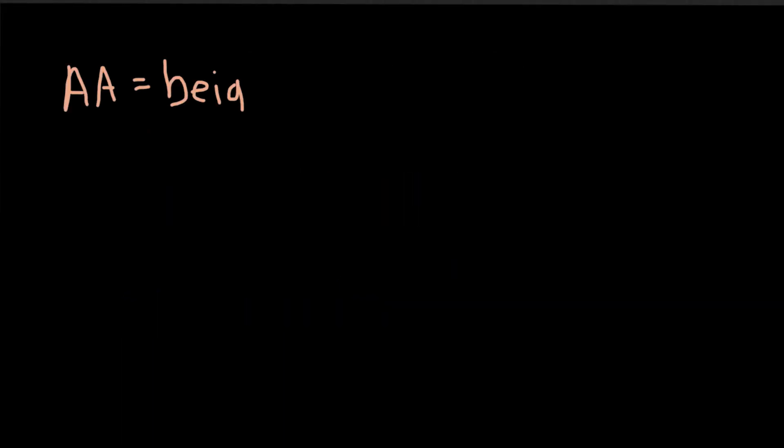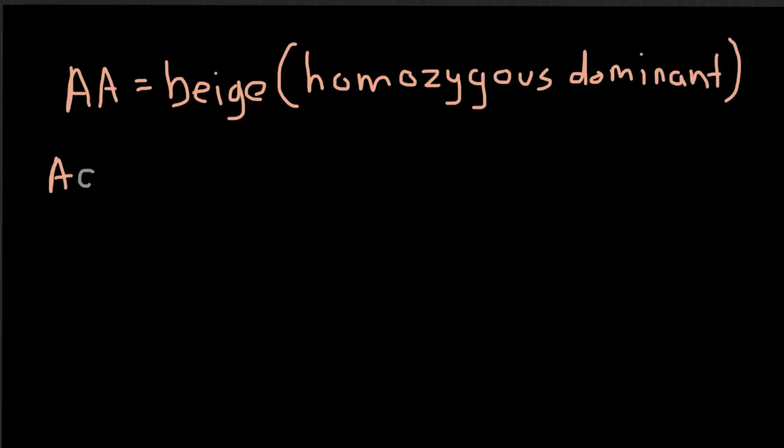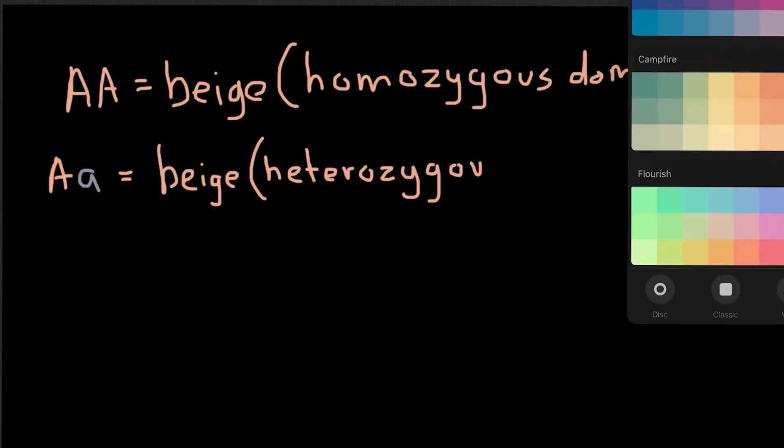Remember that you have two allele copies. So the combinations you could have are big A big A, big A little a, or little a little a. These are the genotypes and your genetic makeup. Genotypes can help determine a phenotype, which is a physical characteristic, one that your eyes can see.